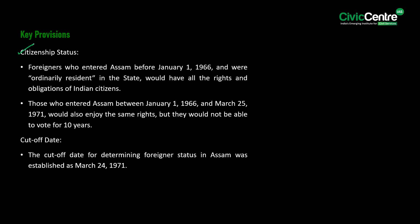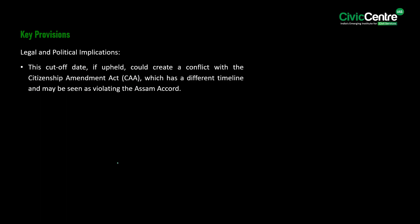Looking at the key provisions of Section 6A: foreigners who entered Assam before January 1, 1966 and were ordinarily resident in the state would have all the rights and obligations of Indian citizens. Those who entered Assam between January 1, 1966 and March 25, 1971 would enjoy the same rights but would not be able to vote for 10 years. The cutoff date for determining foreigner status in Assam was established as March 25, 1971.